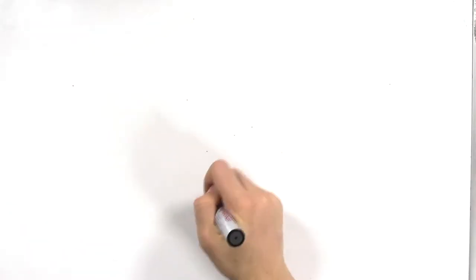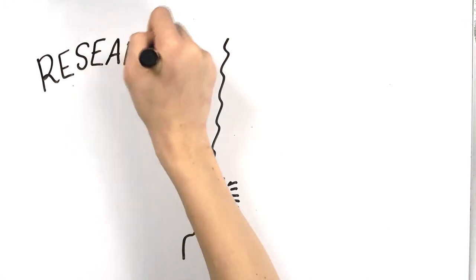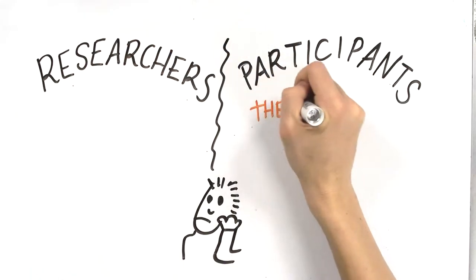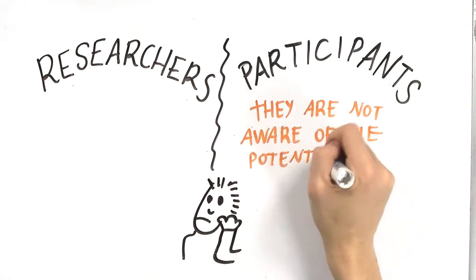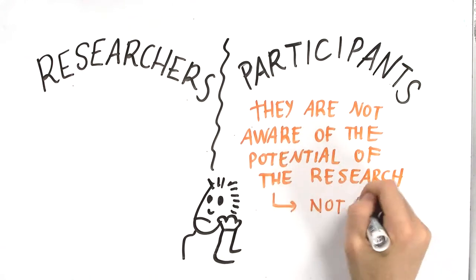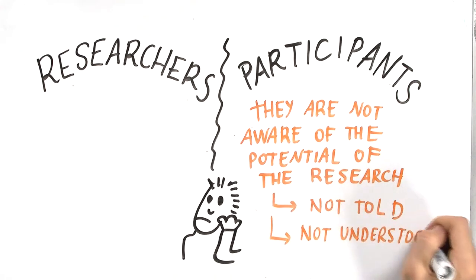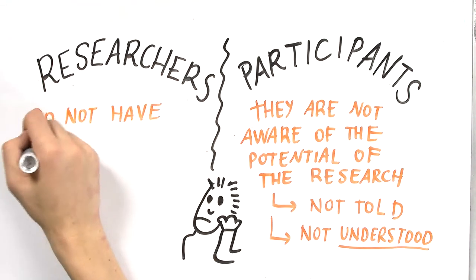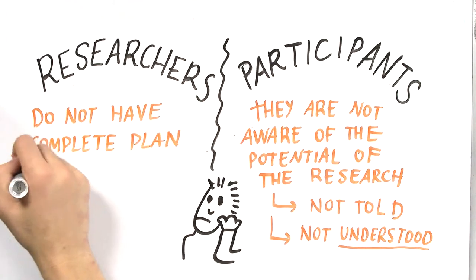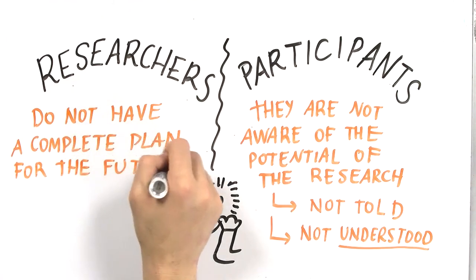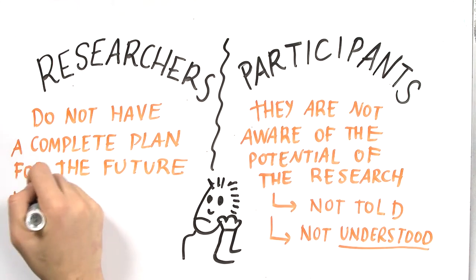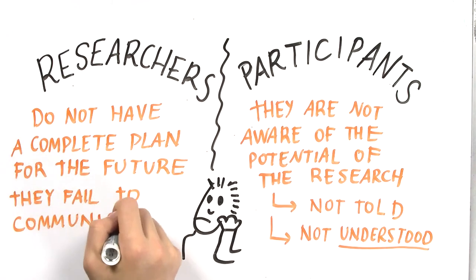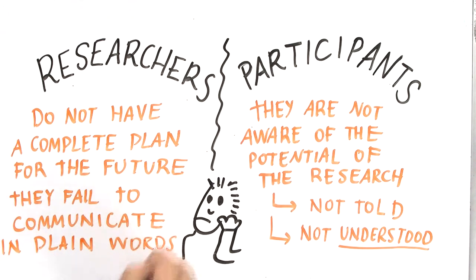A common ethical problem related to data collection is the imbalance of information between the researchers and the participants. Participants are usually not aware of the full potential or application of the research project, either because they were not told or they didn't understand the scientific wording. Most of the time this is not intentional. It happens because the researchers did not have a complete plan of what they would be doing with the sample when they started the collection, or because the scientific concepts are so familiar to the scientists that they failed to explain them in plain language for the participants.